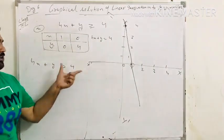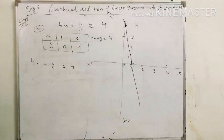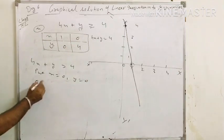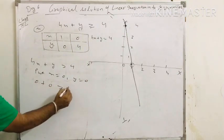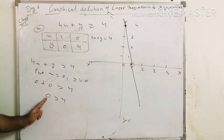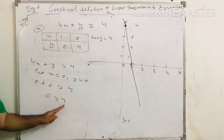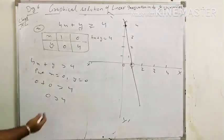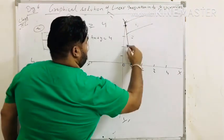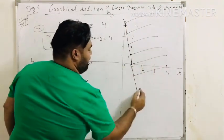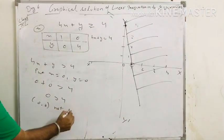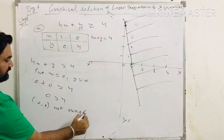Put x equals to 0 and y equals to 0 into 4x plus y greater than or equal to 4. This gives 0 plus 0 greater than 4, that is 0 greater than 4. But 0 is less than 4, so the point 0,0 is not satisfied in this inequality.